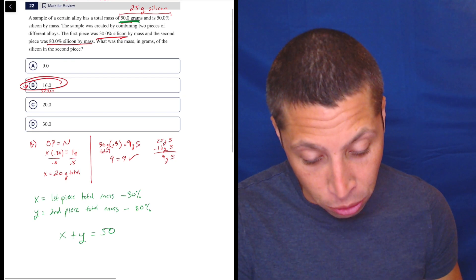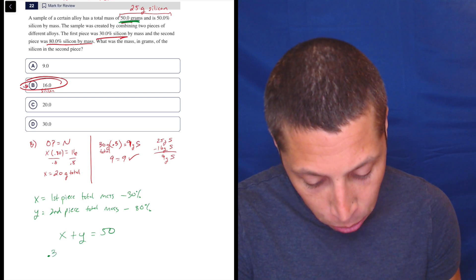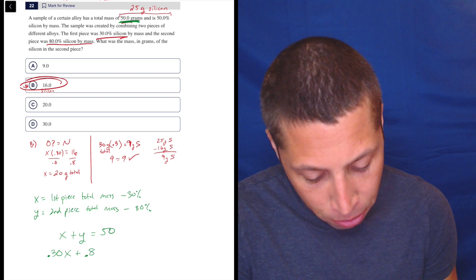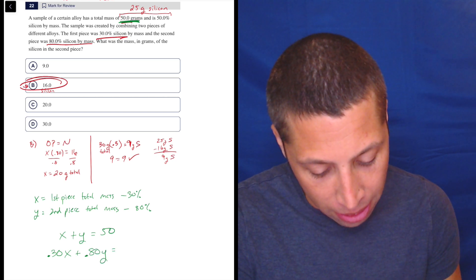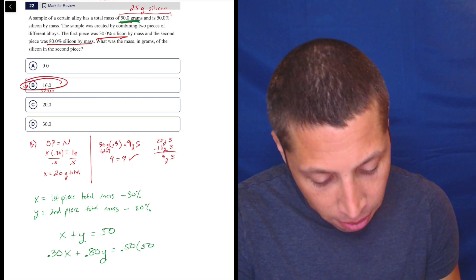So we're going to say that 30%, so 0.30 of the first piece plus 80% of the second piece is going to be, and this is where some people might mess up, is going to be 50% of the 50.